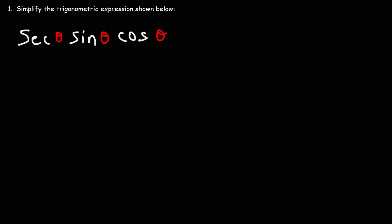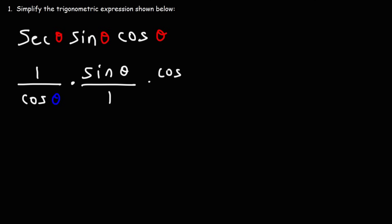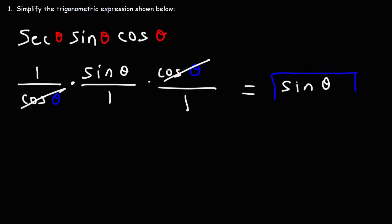Now let's get started with the first problem. We can replace secant with 1 over cosine theta. Sine theta we can leave as is, writing it as sine theta over 1, and then rewrite cosine theta. At this point we can cancel cosine theta, so the final answer is simply sine theta. This entire expression simplifies to sine theta.